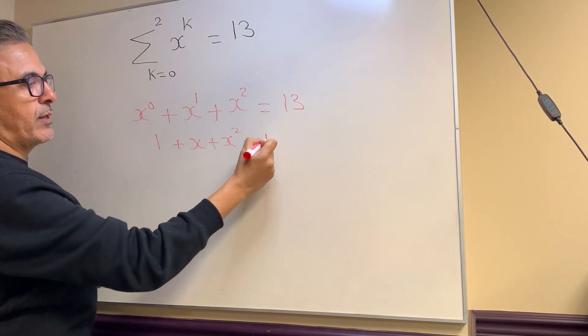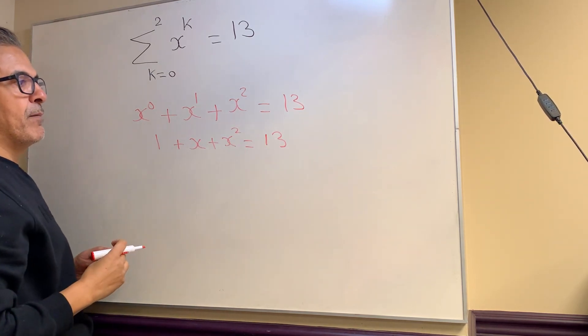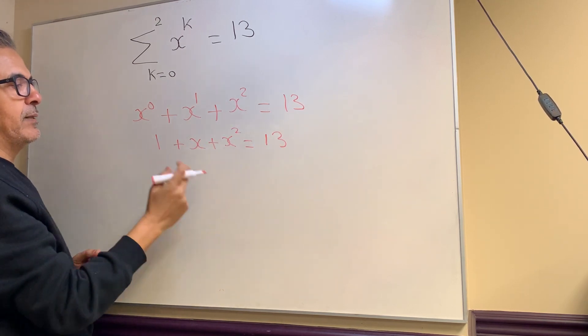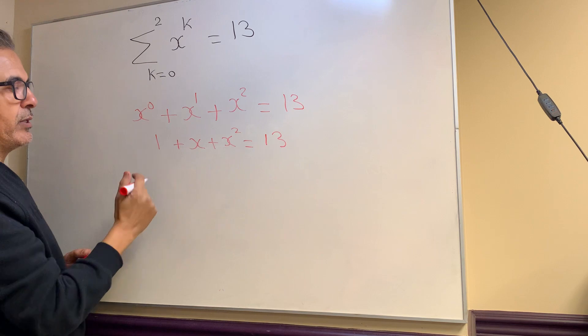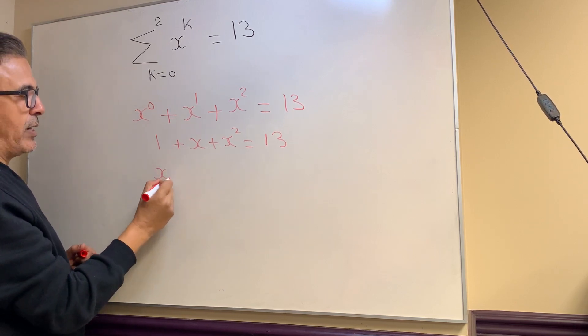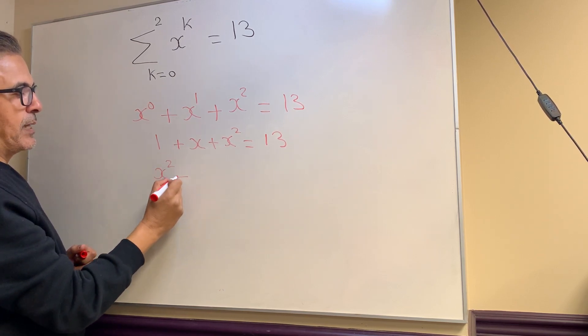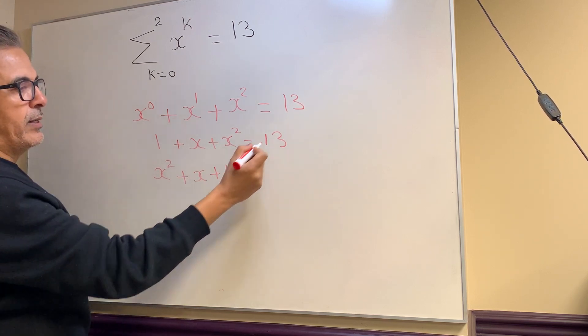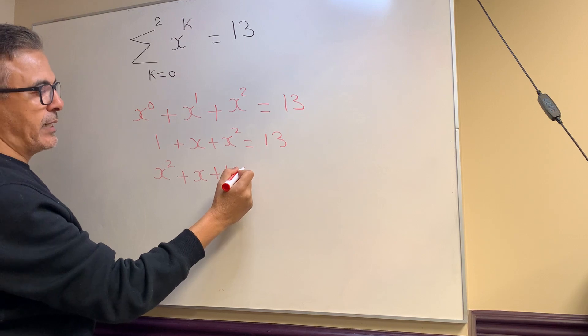Now what I want to do is move the 13 to this side, so I'm going to minus it. And then I'm going to write this in degree order at the same time. So it's going to be x^2 + x + 1, and then bringing the 13 to the other side will be minus 13, equals 0.